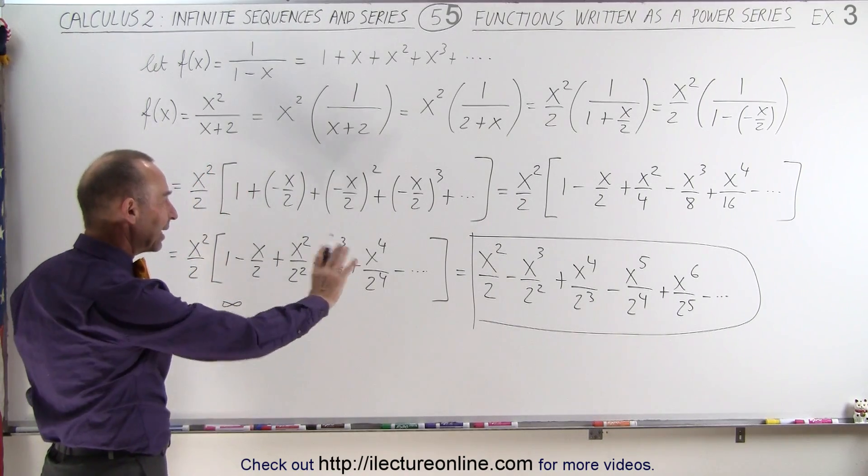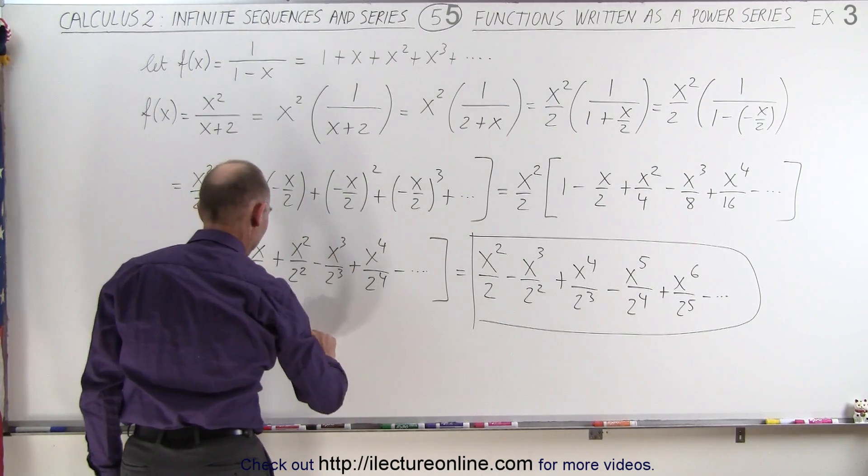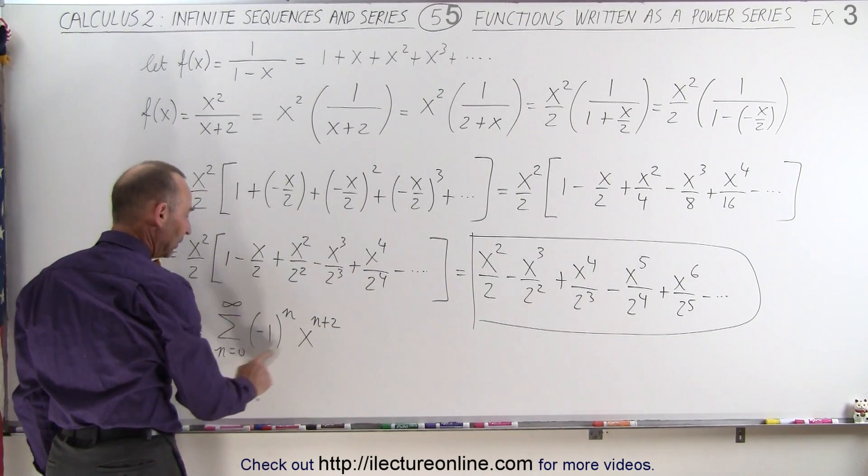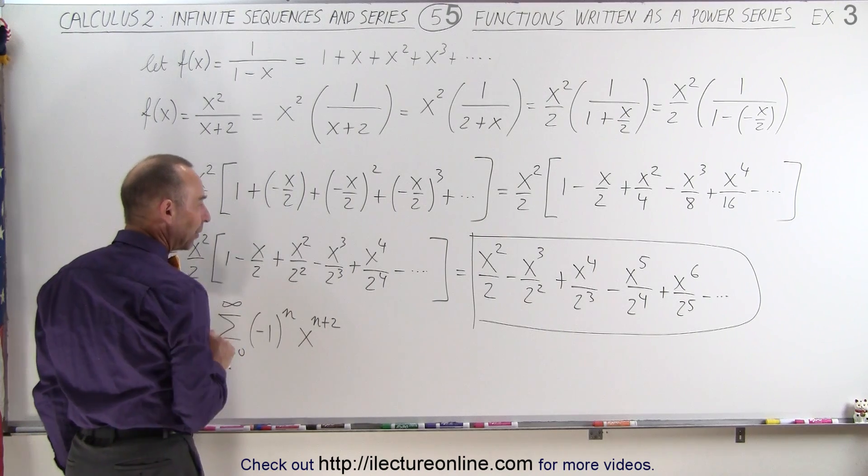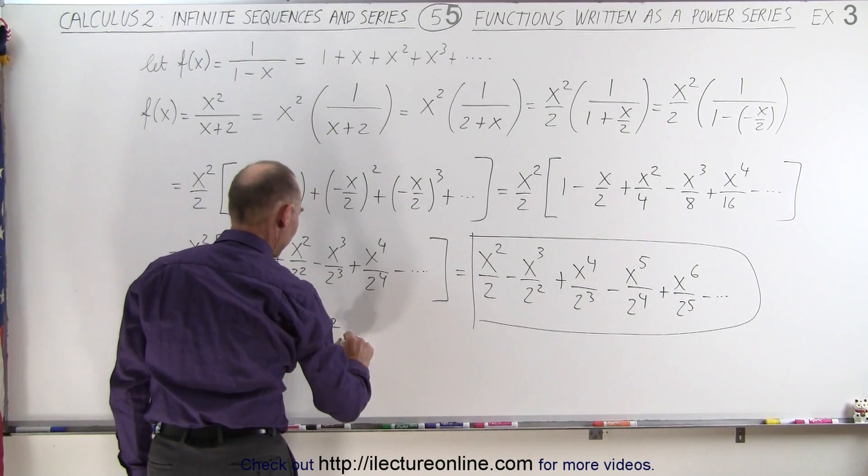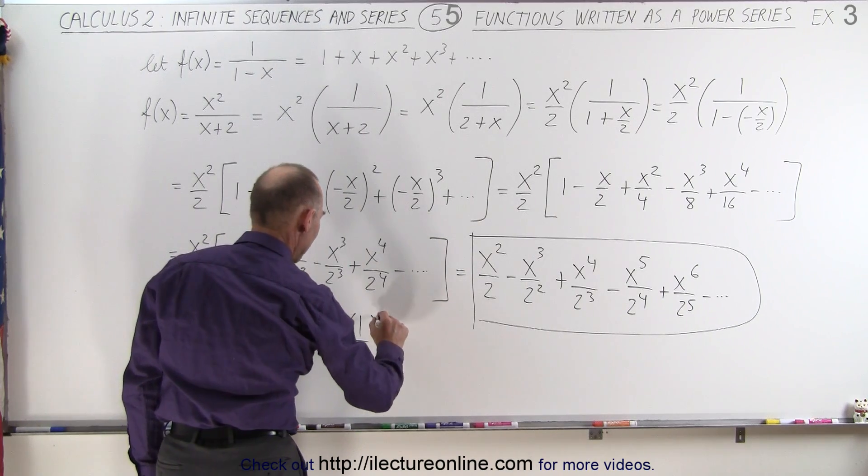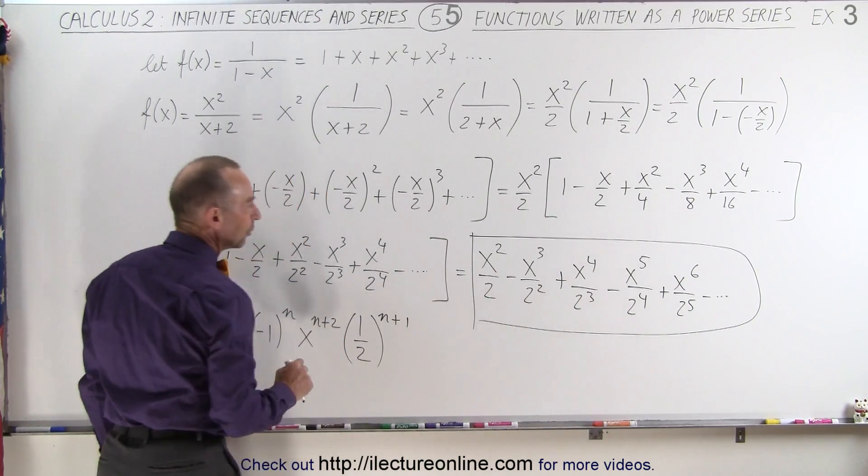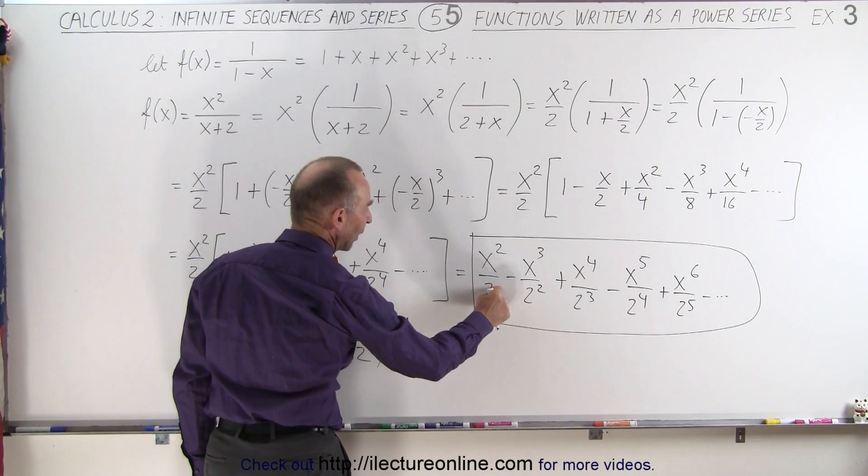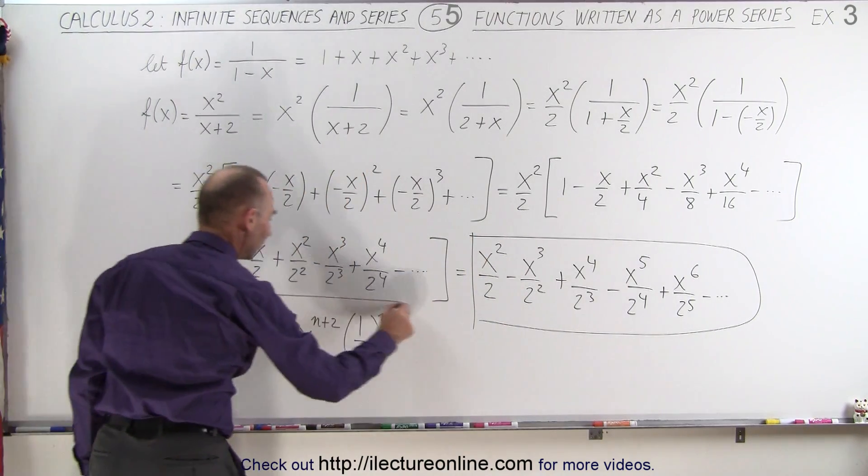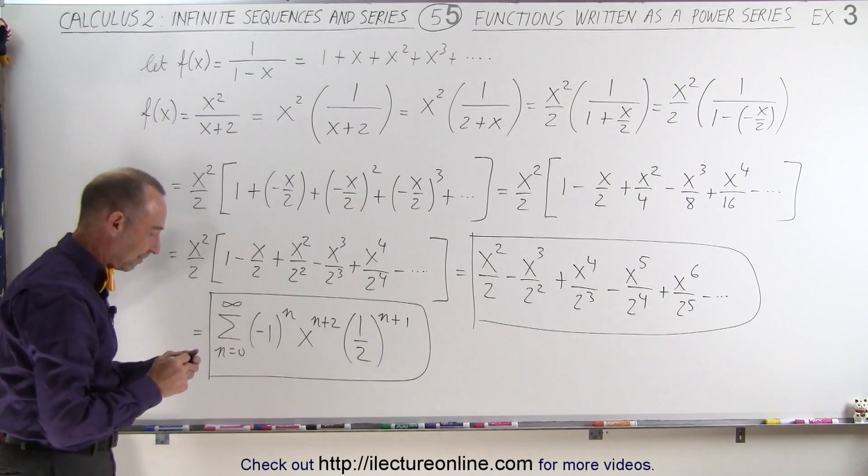Now we need to take care of the x's, so we have x raised to the n plus 2, so that when n equals 0, x will be to the second power. And then we have 1 over 2 raised to the n plus 1 power. Notice that the exponent of the 2 is 1 less than the exponent of the x.